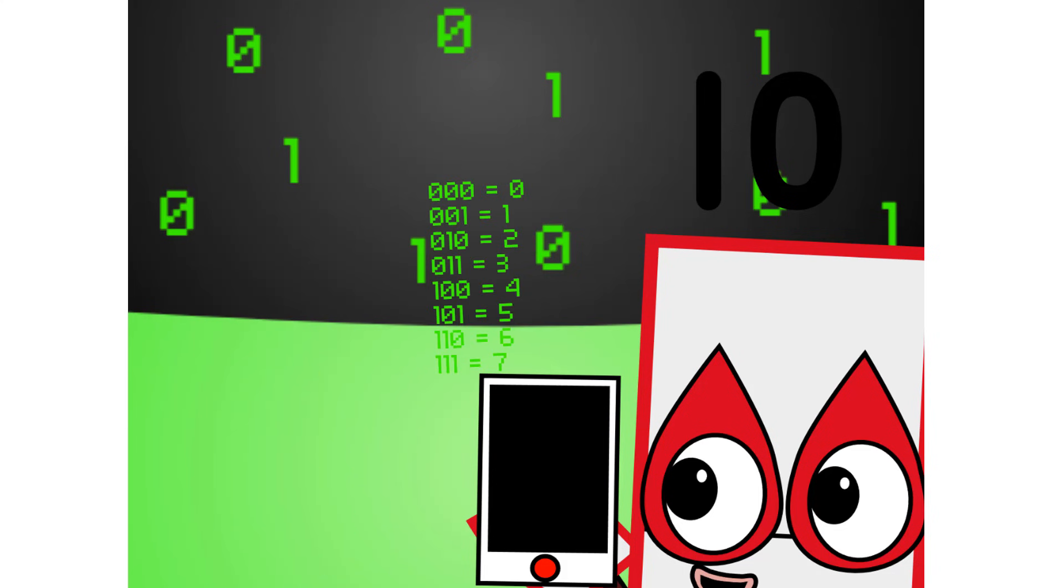There are 8 different combinations of 3 digit numbers in binary. This means that binary can easily be coded into octal. There are also 16 different combinations of 4 digit numbers in binary. This means that binary can easily be coded into hexadecimal too.